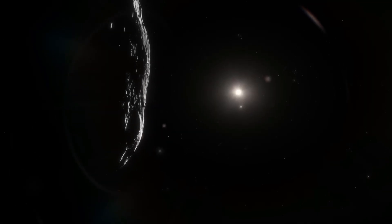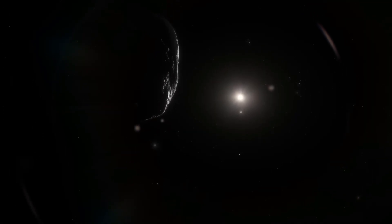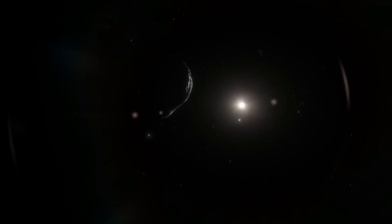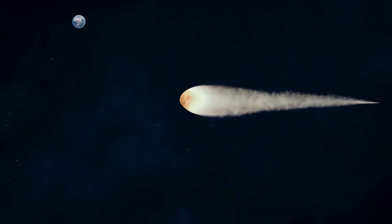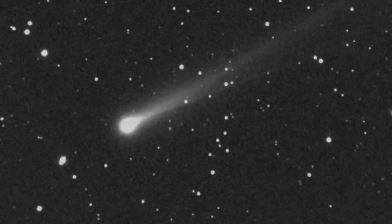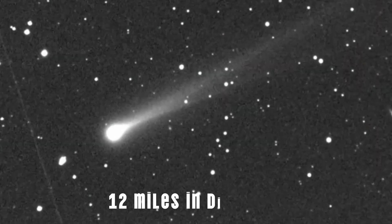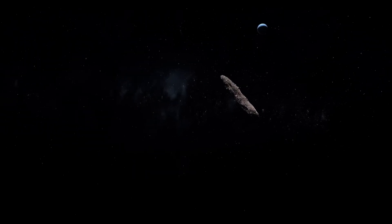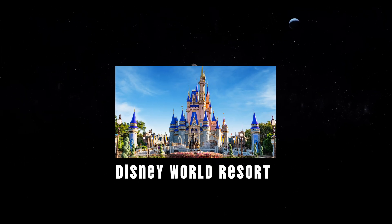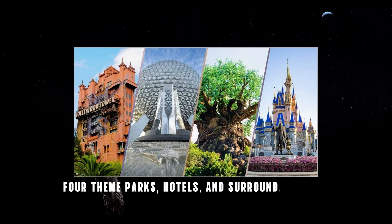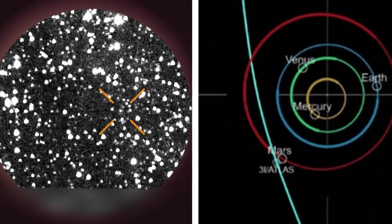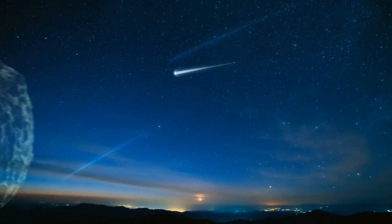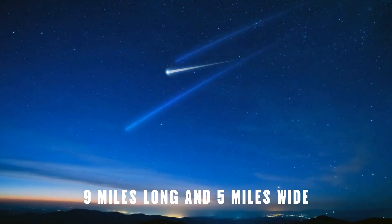But 3i Atlas is different in ways that are genuinely puzzling. First, there's the size question. Based on its brightness and assuming it's simply reflecting sunlight like a normal space rock, 3i Atlas would need to be roughly 12 miles in diameter. To understand just how massive this would be, imagine an object larger than the entire Disney World Resort, including all four theme parks, hotels, and surrounding areas, hurtling through the void between stars.